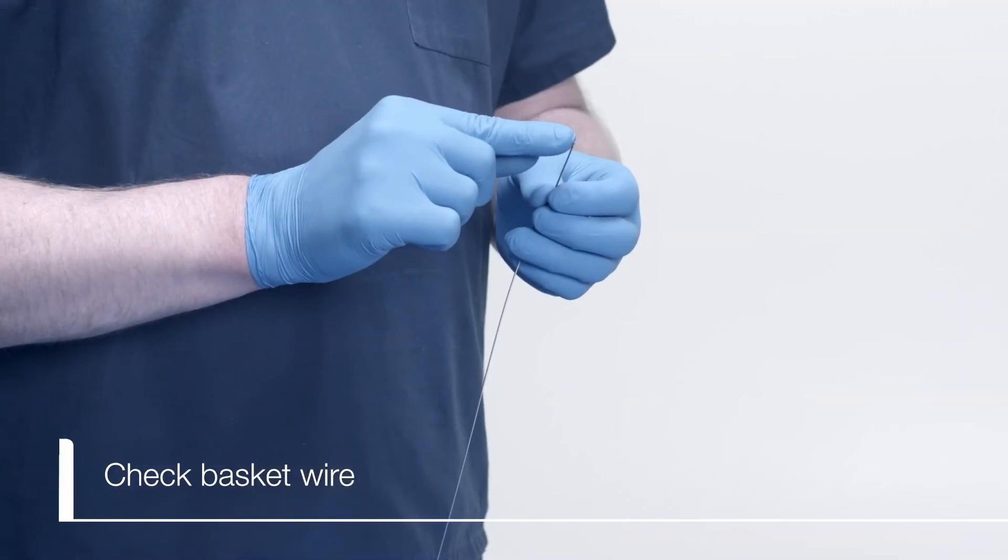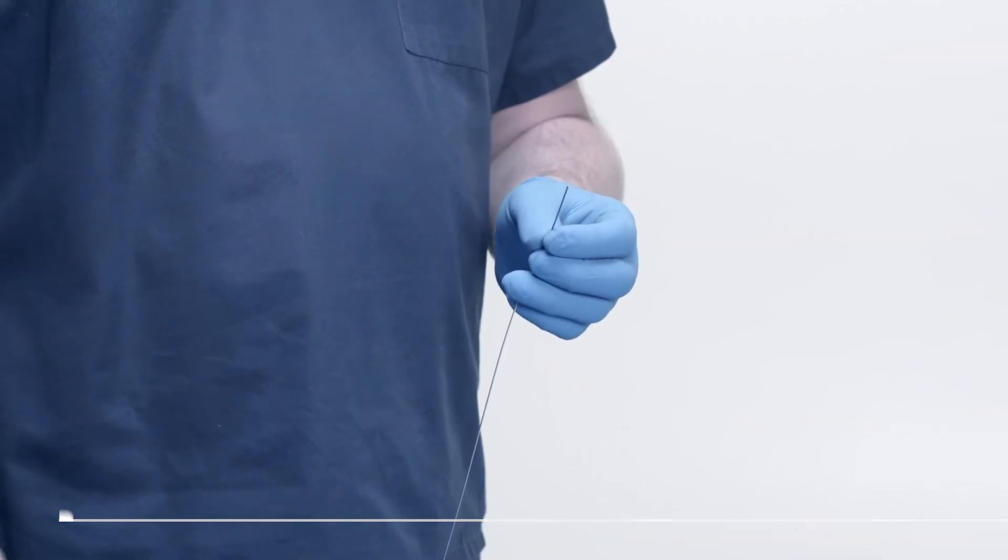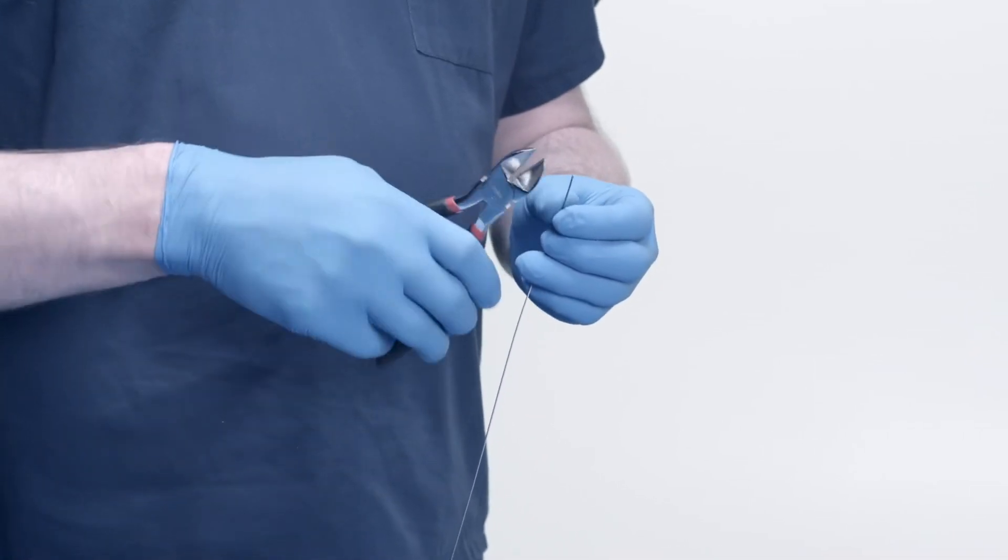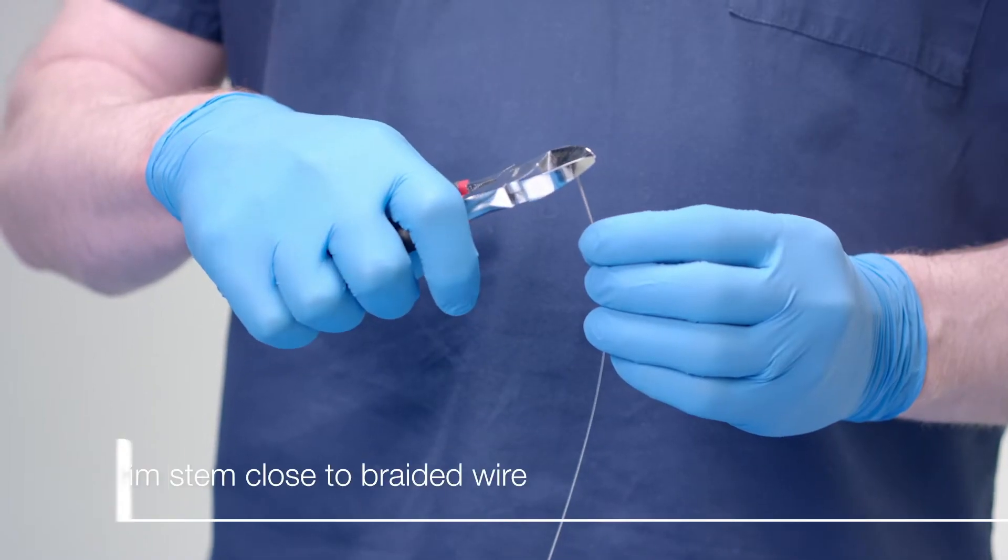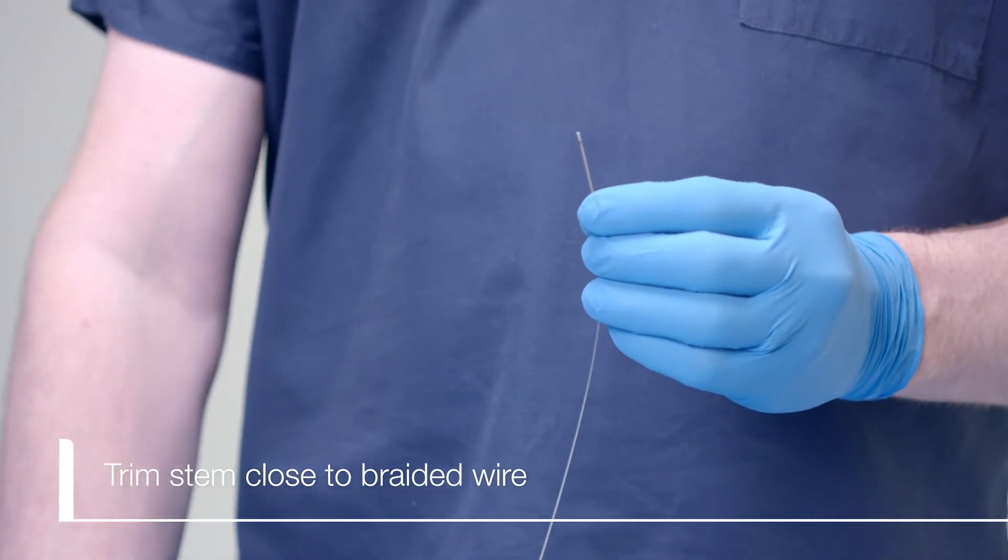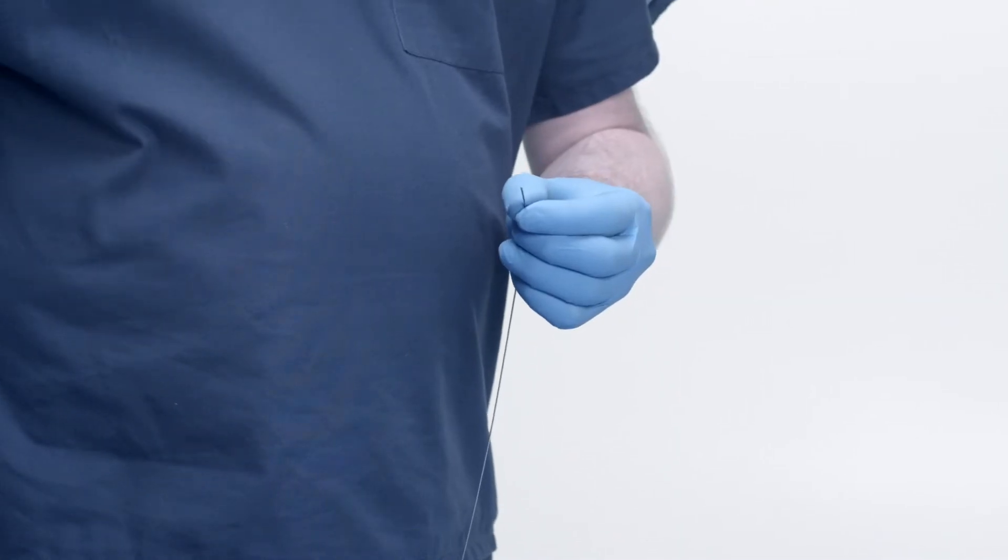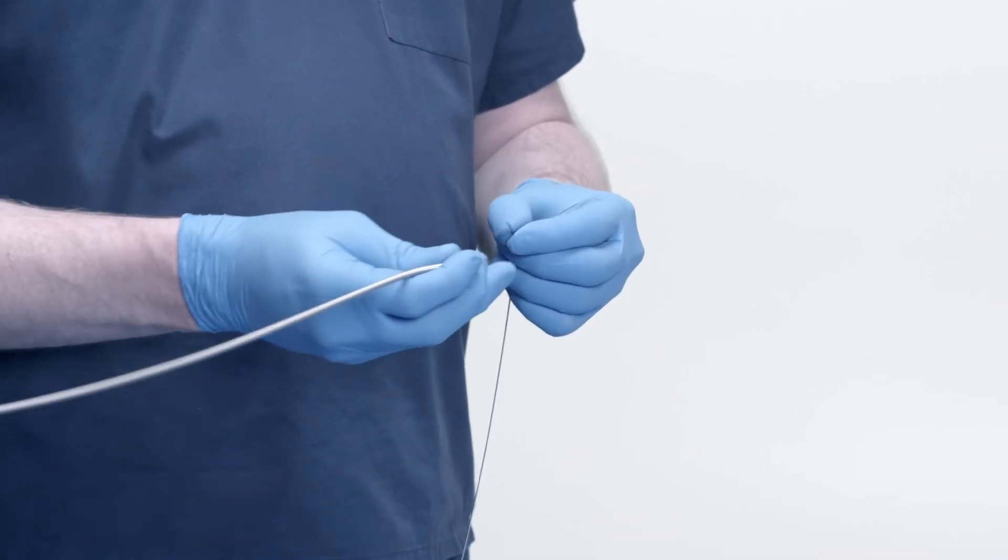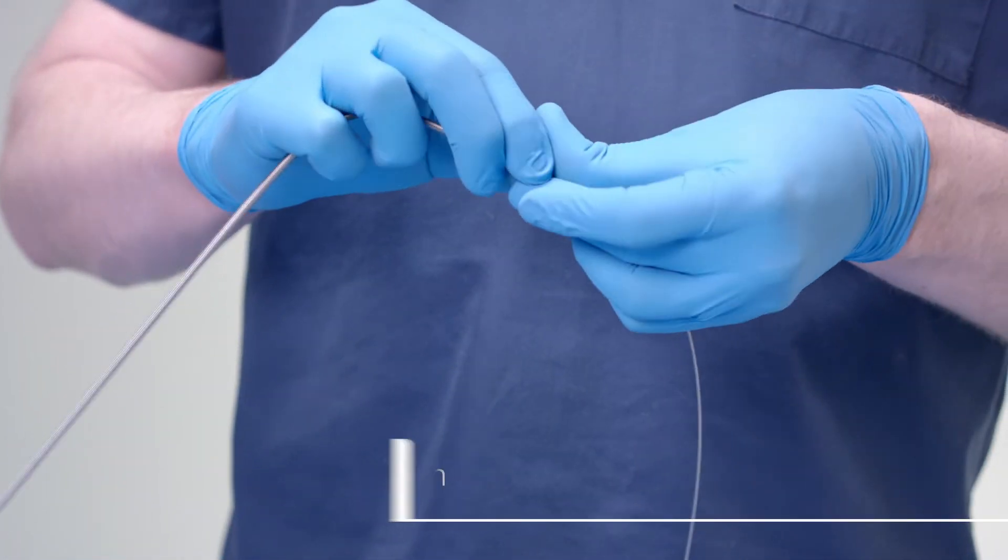Now you should see the remaining stem connected to one braided wire hanging from the patient's mouth. Trim the remaining stem close to the braided basket wire with the wire cutters. If too much of the stem is left, then it will not smoothly pass through the emergency Lithotripsy coil sheath.